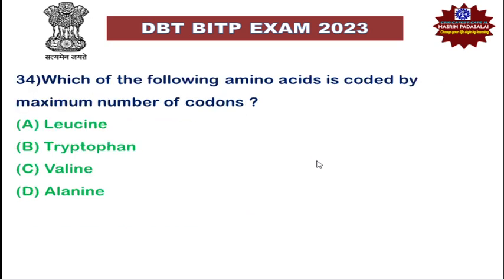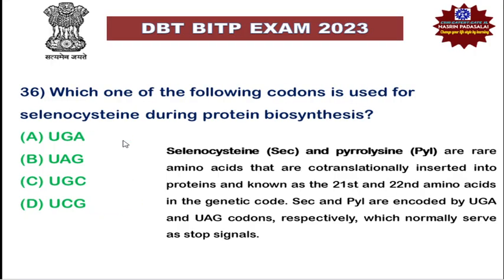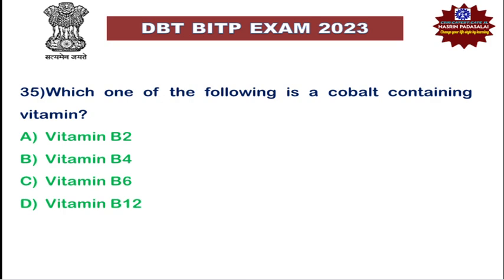Next: which amino acid is coded by the maximum number of codons? The answer is leucine. Among the 20 amino acids, three — leucine, arginine, and serine — are each encoded by six different codons. Methionine and tryptophan are the only two amino acids coded by just one single codon. Next: which of the following is a cobalt-containing vitamin? The correct answer is vitamin B12, which contains cobalt — that is why it is called cobalamin. It is the largest and most complex vitamin. Vitamin B1 contains sulfur, while vitamins B6 and B12 contain phosphorus. We will continue in the part 5 video — thank you for watching.